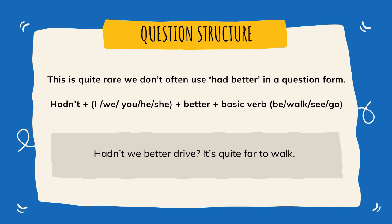Let me highlight one thing about the question form for 'had better.' It's usually used as a negative — so you saw the structure: hadn't + pronoun or name + better. 'Hadn't we better drive?' — the negative actually means positive. It's strange but this is the way English works. If I say to my friend, 'It's very cold outside — hadn't we better drive to work?' I've used the negative, but I'm saying it's a good idea to drive. I'm not saying we shouldn't drive; I'm saying we should drive.